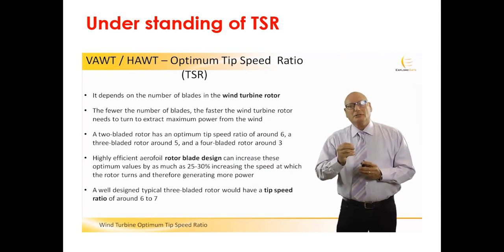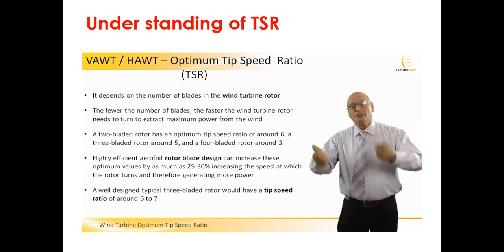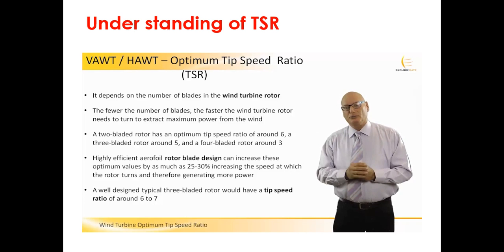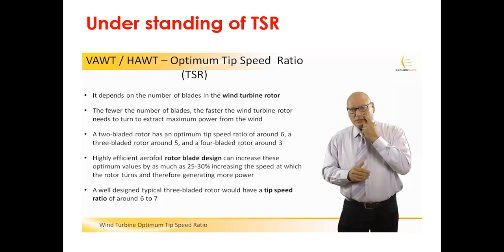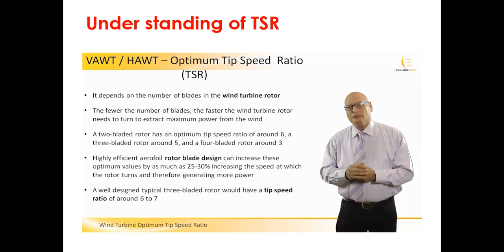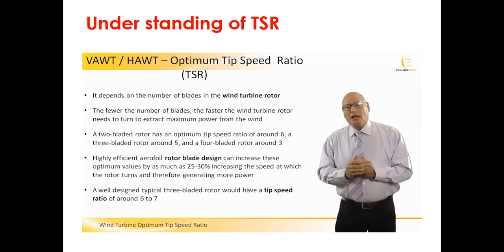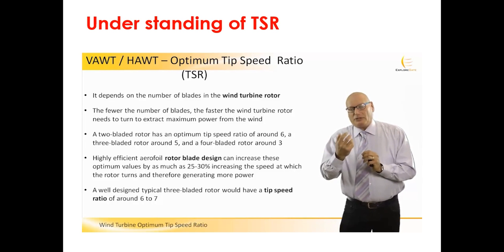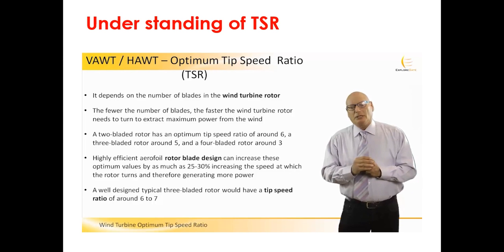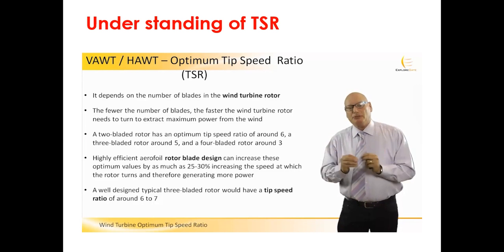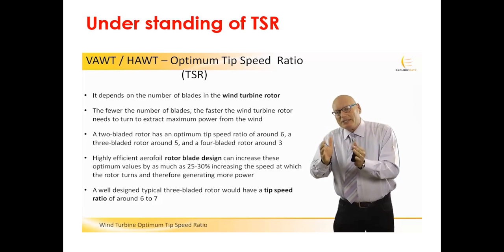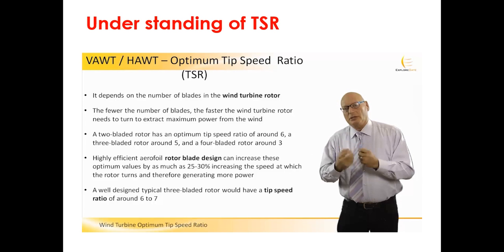From the embedded reference video: the TSR depends on the number of blades in the rotor. Fewer blades mean the rotor needs to turn faster to extract maximum power. A two-bladed rotor has a TSR of around 6, three-bladed around 5, and four-bladed around 3. With an efficiently designed rotor blade, these optimum values can be increased by 25–30%. A well-designed three-blade rotor would have a TSR of around 6 to 7, possibly up to 8.